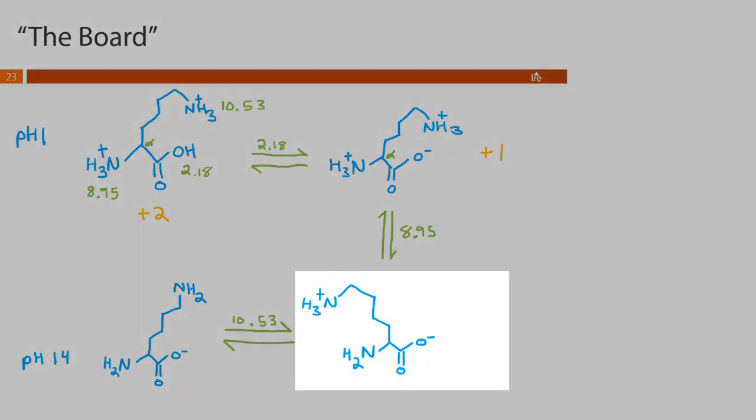This next one we have a positive and one negative so 1 minus 1, here is our neutrally charged species. And then our last one we have only one single charged group here, we have a negative charge so this net charge is negative 1.